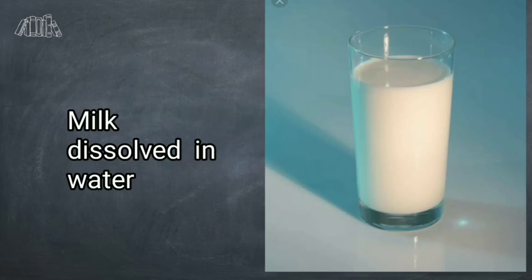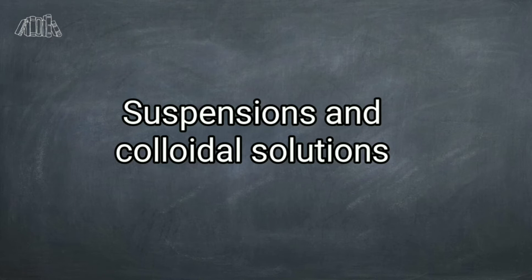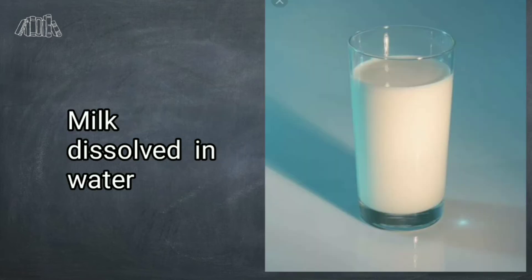I have taken two beakers and filled them with water. For one beaker I added milk, and for the second beaker I added chalk powder — chalk pieces crushed into powder. I stirred both beakers and left them undisturbed on the table for some time. Now I will show you through a slide what happens. This beaker contains milk — if you keep it undisturbed, it looks like a complete pure white color.